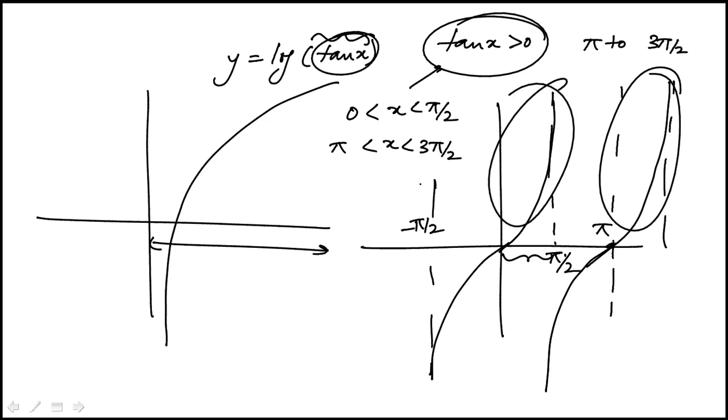You can eliminate the answer choices. A is out because it can't be between pi over 2 and pi, where it's negative.